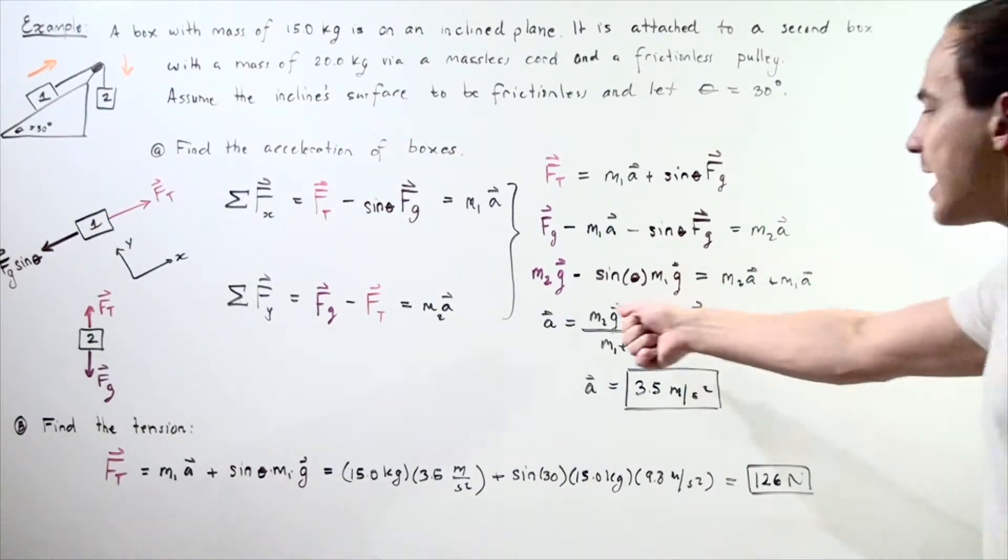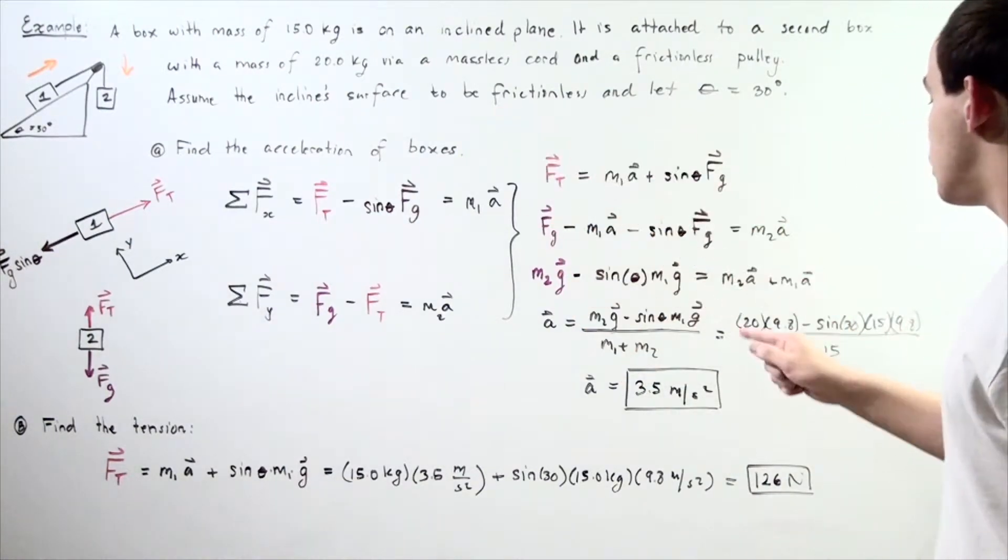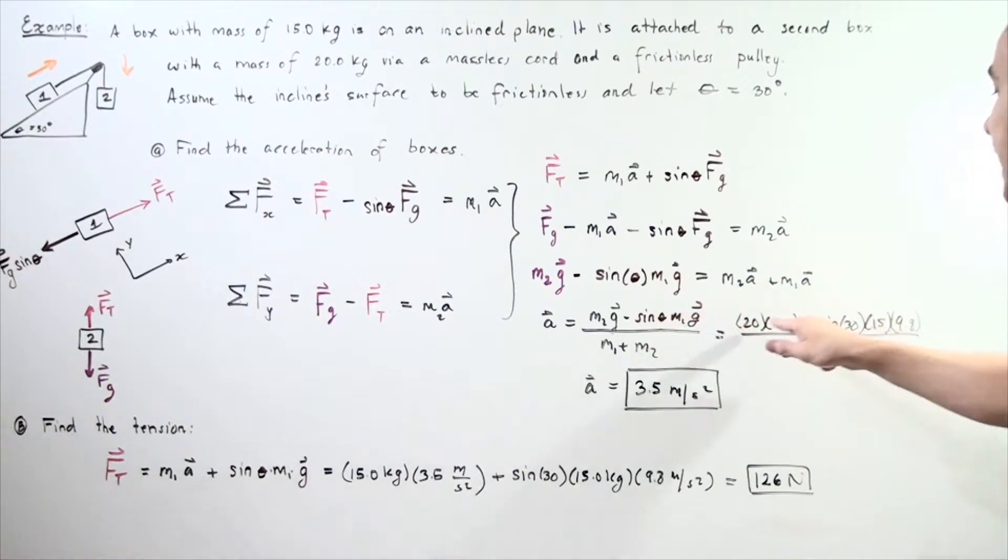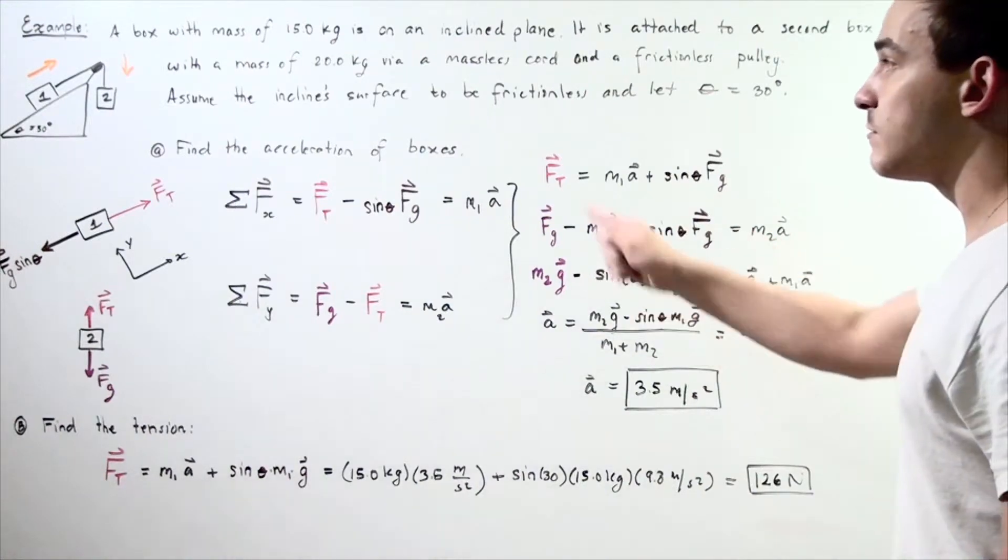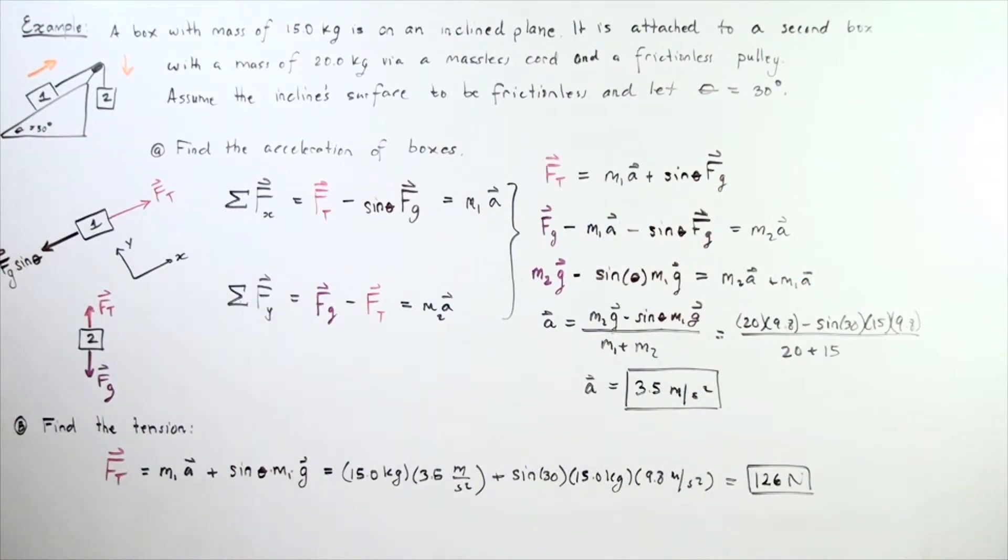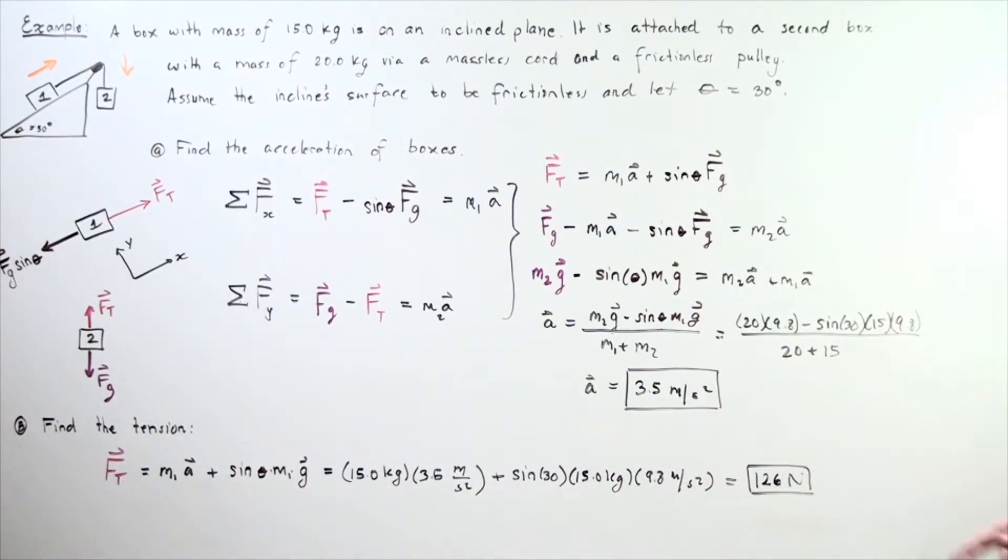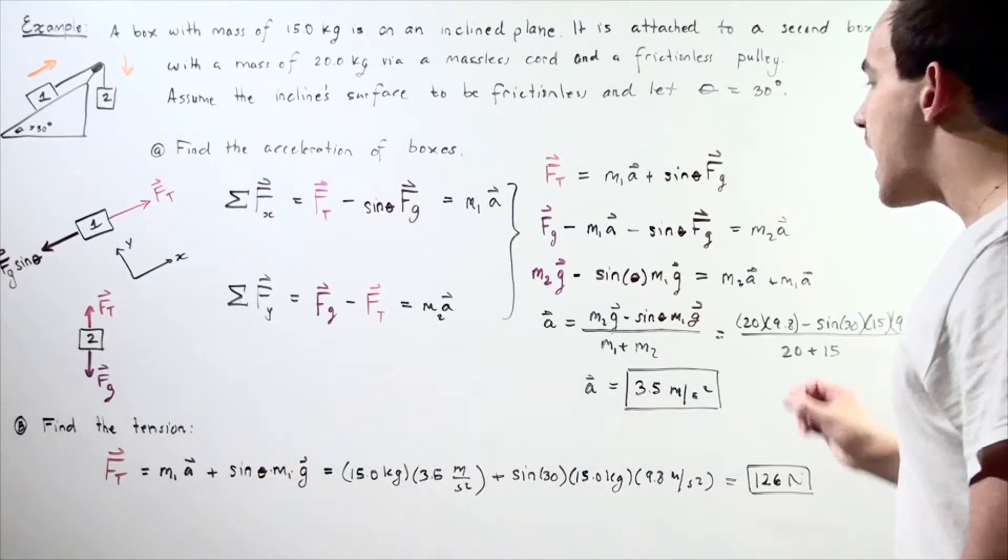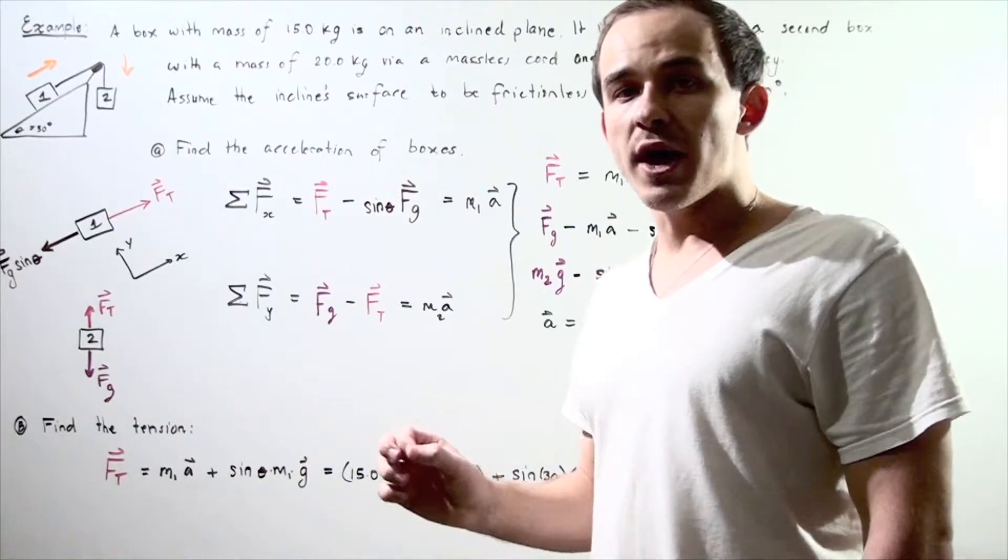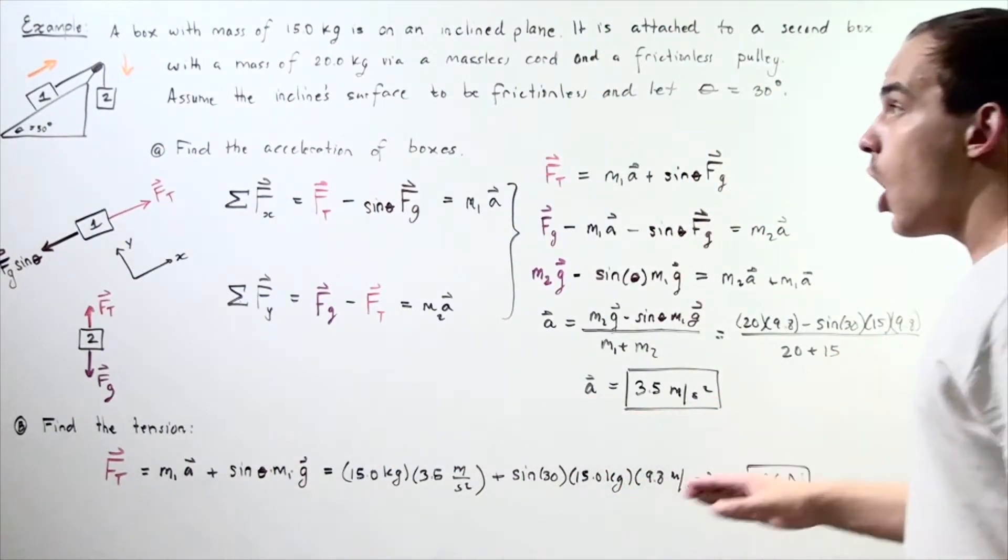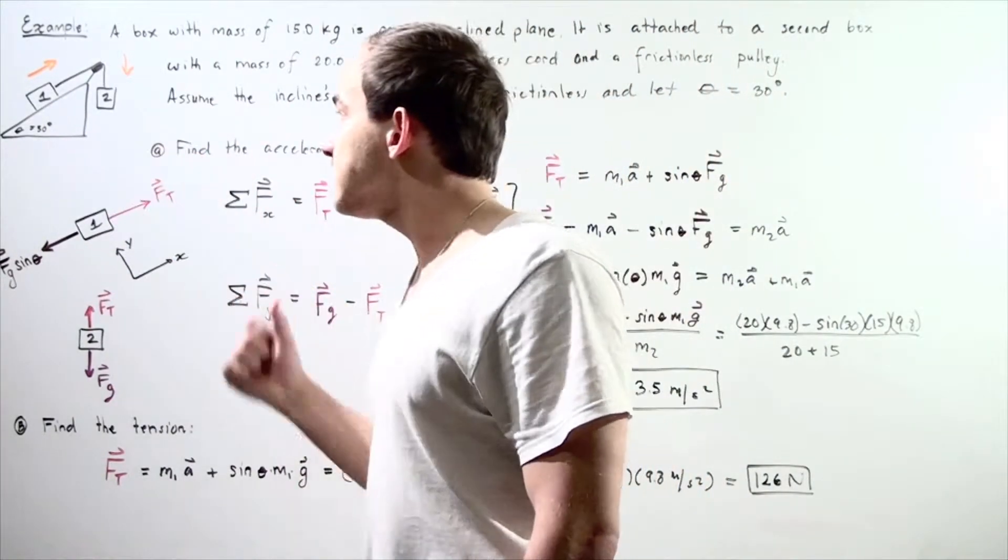And we find that the acceleration of our object, box two or box one is equal to the following formula. We plug in our values. Mass of box two is 20 kilograms. G is 9.8 meters per second squared minus sine of 30 is 0.5 multiplied by mass of box 1, 15, multiplied by the gravitational constant 9.8. Divide that whole thing by the sum of the masses, 20 plus 15, so 35 kilograms and we get 3.5 meters per second squared. This is the acceleration of the two boxes of our system.